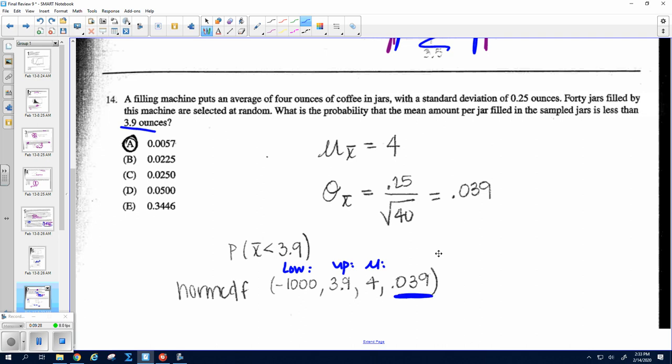And here's where I would expect some people to get messed up. Be careful that you did not use 0.25, because this is the standard deviation from one jar, alright, or the population. We're talking now about taking 40 jars and doing that a bunch of times. And so I need to use my formula sigma over the square root of n for a sample mean. And so I do 0.25 over the square root of 40, which is 0.039. And that gives me A.